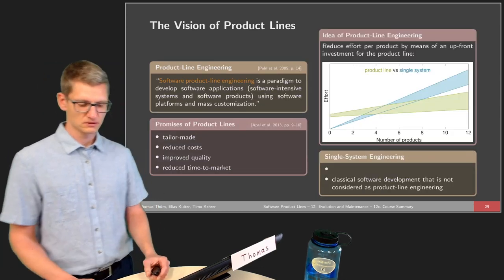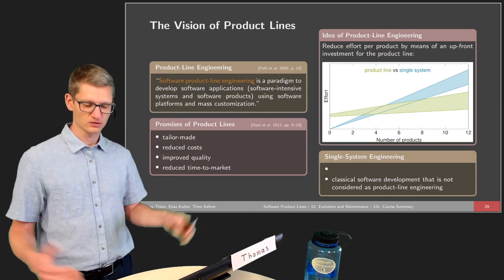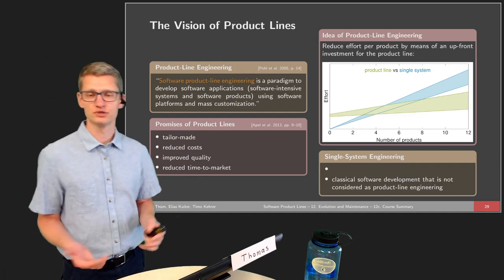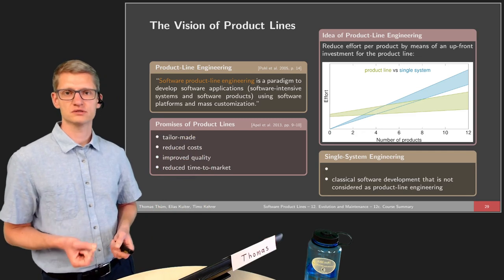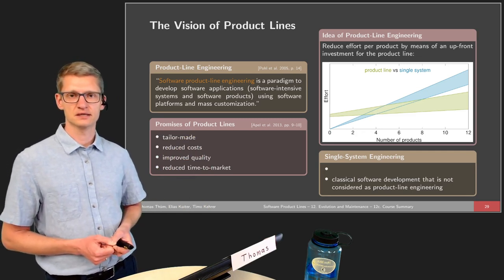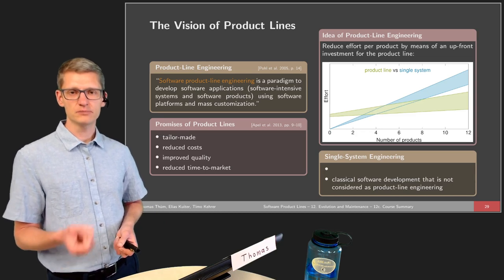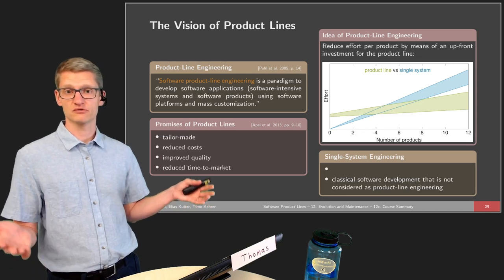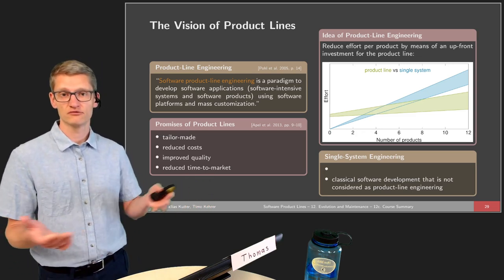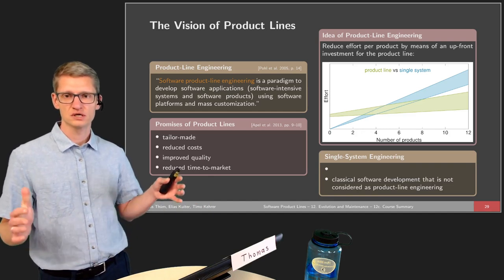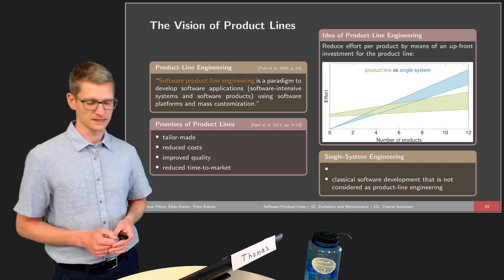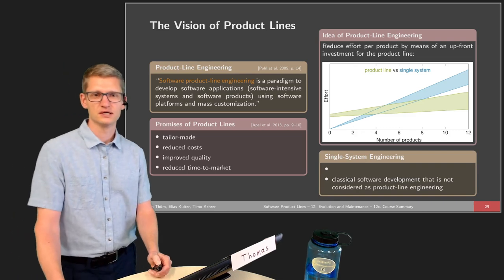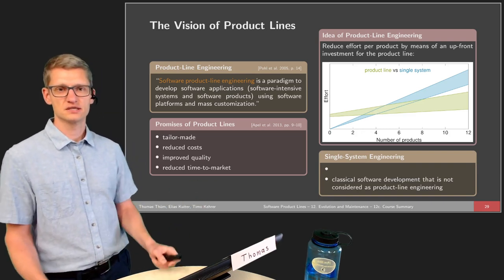We looked at product line engineering and its promises: we produce tailor-made products, we have reduced costs, improved quality, and reduced time to market. We see, for instance with the lecture on product line testing, that improved quality can be achieved because there's no need to test every possible configuration — by means of pairwise interaction testing, we can find many problems in the software with reduced costs but still achieve improved quality. Ultimately, all this comes down to wanting to be more efficient than single system development.